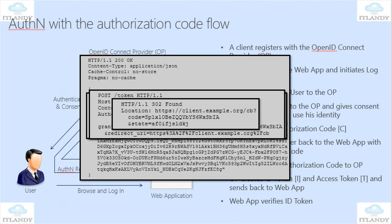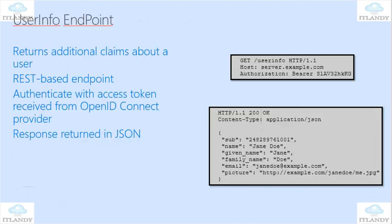Okay, next — user info endpoint. It returns additional claims about the user via a REST API, authenticated with a token received from OpenID. You can see this is very similar to what we do with all this JSON nowadays — given name, surname, email address, and so on.